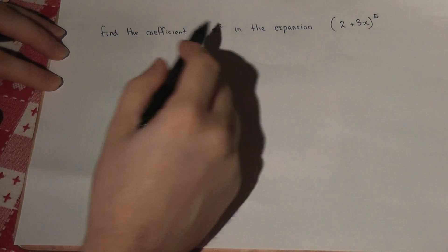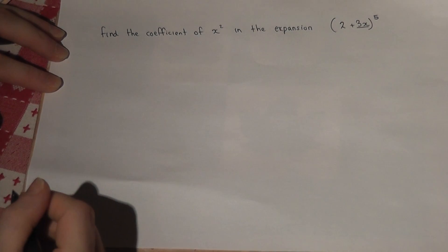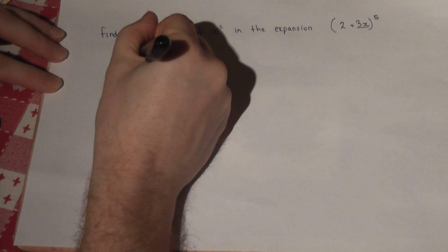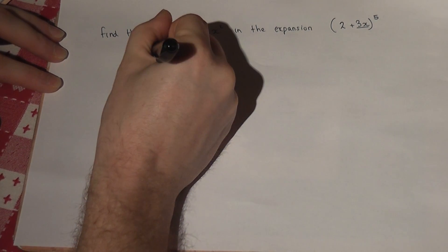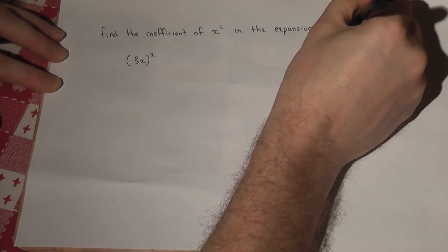So I want the x squared term. This part here gives the x squared part. So I'm going to do 3x squared. But this interacts with the 2 in the following way.